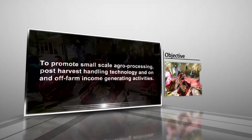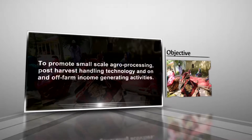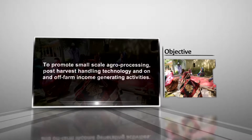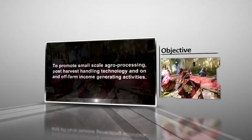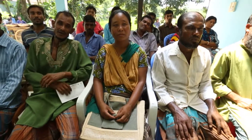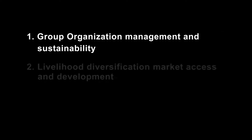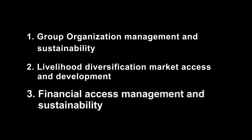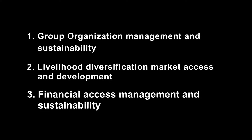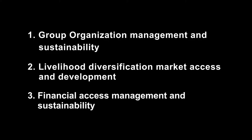The project also aims to develop appropriate market linkage among producers and consumers, and to promote small-scale agri-processing, post-harvest handling technology, and on- and off-farm income generating activities. The project comprises three major technical components: group organization management and sustainability, livelihood diversification, market access and development, and financial access management and sustainability.